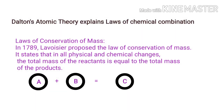Dalton's atomic theory explains the laws of chemical combination. The first law — the law of conservation of mass — is also explained by Dalton's atomic theory. Scientist Lavoisier gave this concept, and according to Dalton's atomic theory, matter is made up of atoms.